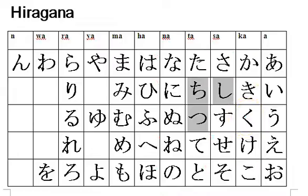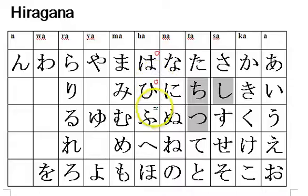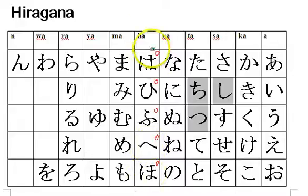The other kind of accent is called maru. Maru means circle. And those only go on ha, hi, fu, he, and ho. These are the only five hiragana that you can add maru accents to.